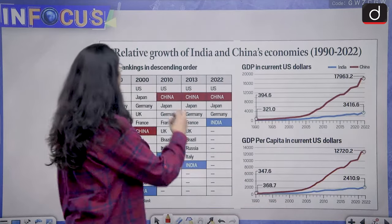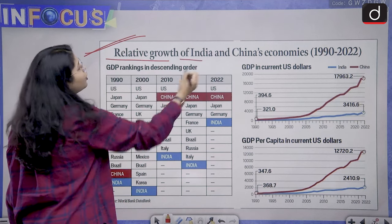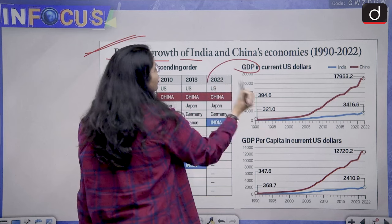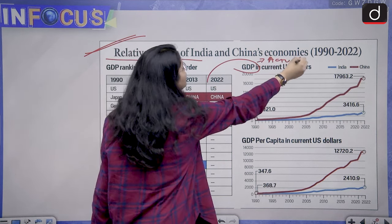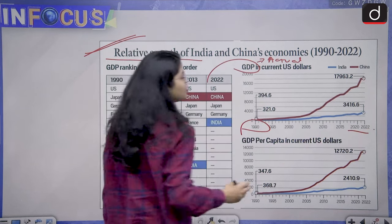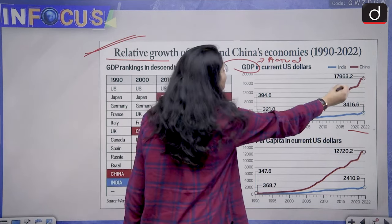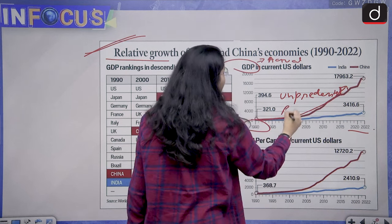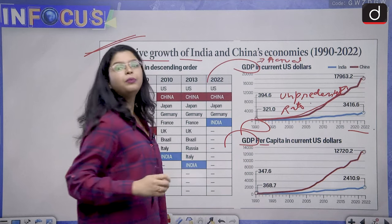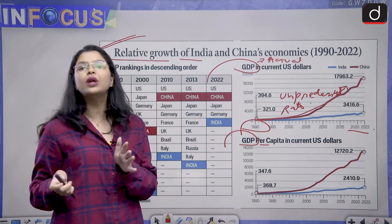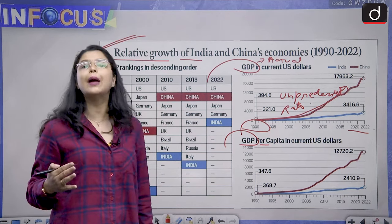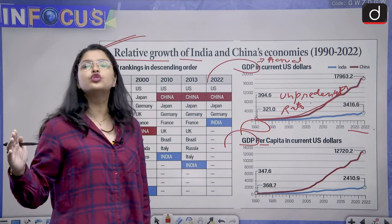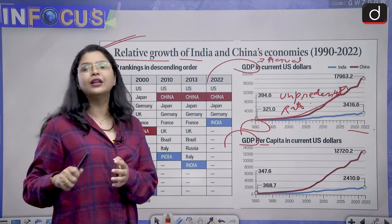This is a pictorial representation of the relative growth of India and China's economies from 1990 to 2022. If you look at the actual GDP, comparing from 1990 to 2022, you will witness that the Chinese economy grew at an unprecedented rate. And you will realize that the GDP per capita was also higher — not only was it growing in overall GDP, it was also growing in per capita GDP. This comparative analysis clearly shows the huge growth in the Chinese economy from 1990 to 2022.